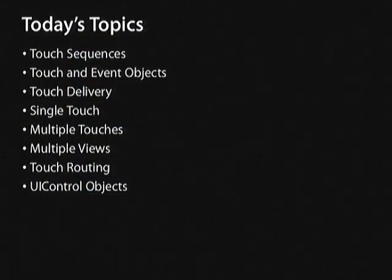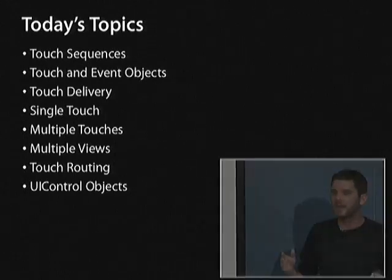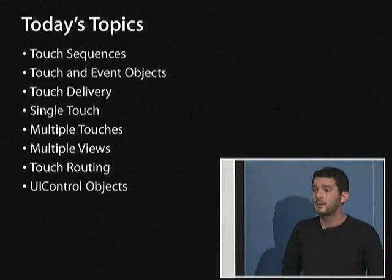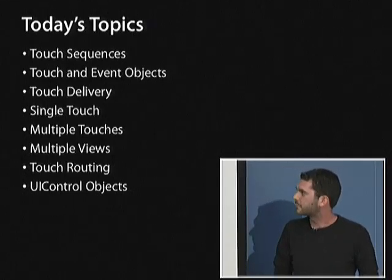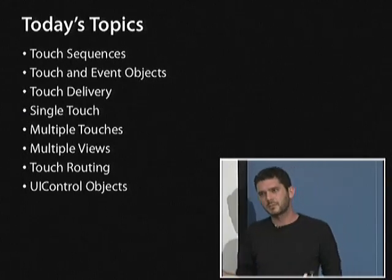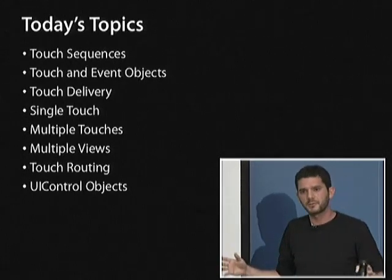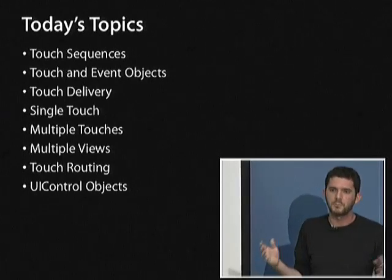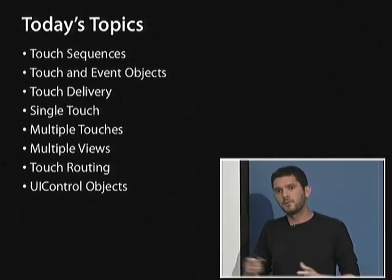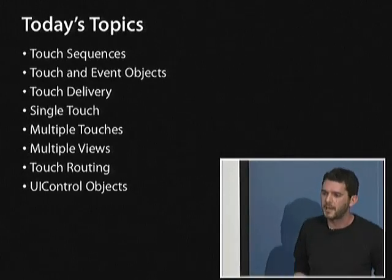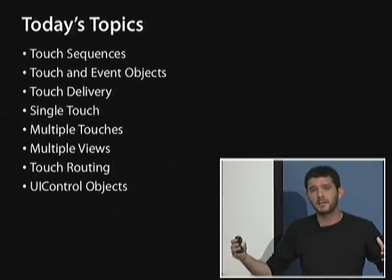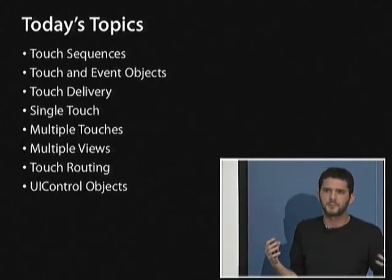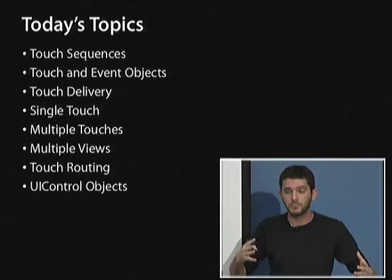Here's what we're going to cover: touch sequences, touch events and objects (the UIKit classes that represent what's happening), delivery (how events get to your app and what form they take), single touch and then expanding to multiple touch, handling touches in multiple views, how touches are routed through your app, and finally UIControl objects — a subclass of UIView that adds higher-level touch concepts.